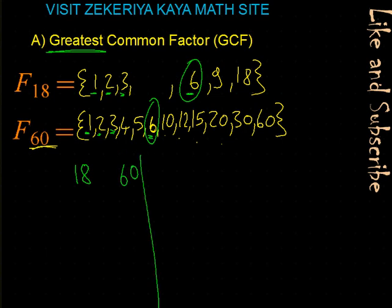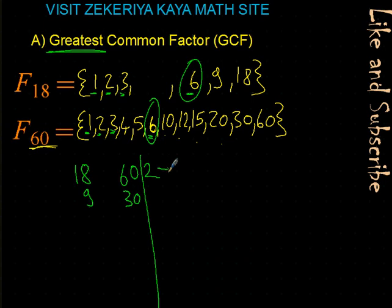We write the numbers 18 and 60 next to each other and start dividing by the smallest prime number, 2. 18 divided by 2 makes 9, and 60 divided by 2 makes 30. Since we divided both numbers, it's a common factor — we put a sign next to that prime number 2. For the next step, 9 and 30: 30 is divisible by 2 but 9 is not. We keep 9 the same. 30 divided by 2 is 15. We couldn't divide both, so we don't put a sign next to this 2.